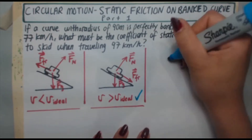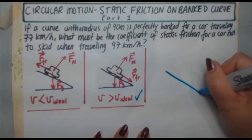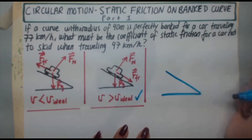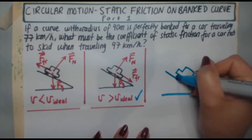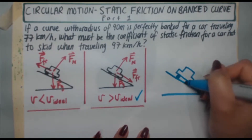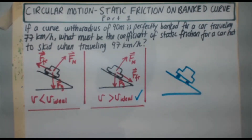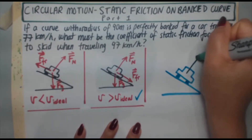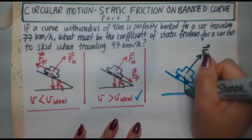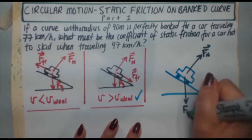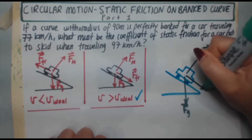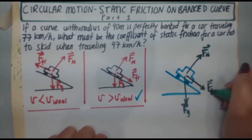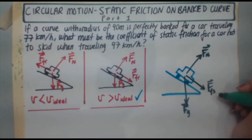Now I'm going to draw our free body diagram for this problem. There's my banked curve with my car. For forces, I have the normal force perpendicular to the surface, the force of gravity going straight down, and because we're in the faster-than-ideal situation, the static friction force Ffs is going down the incline. Those are the three main forces.